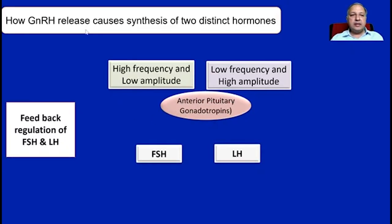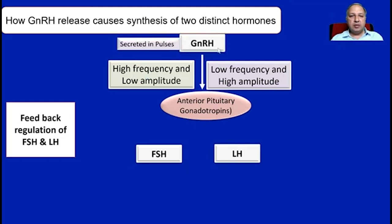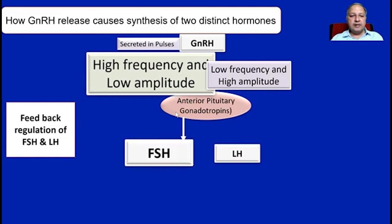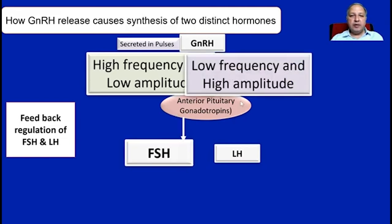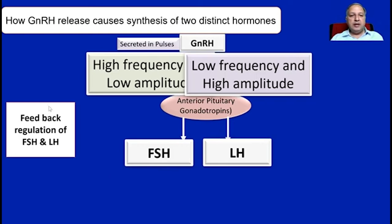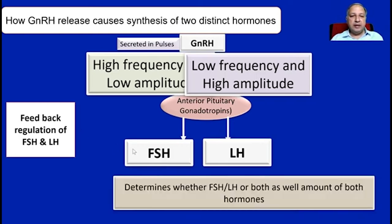How can GnRH cause the release of two different hormones FSH and LH? It is primarily based on the frequency of GnRH release. When pulses are of very high frequency, that leads to synthesis of FSH hormone. When pulses are of low frequency, they primarily cause the release of luteinizing hormone. The frequency and amplitude of release ultimately determines whether FSH, LH, or both will be released and in what amounts.